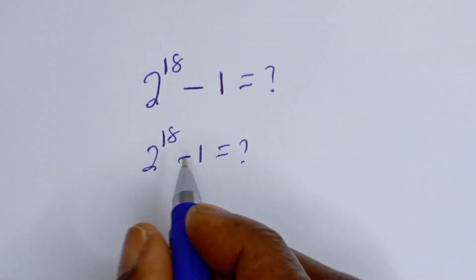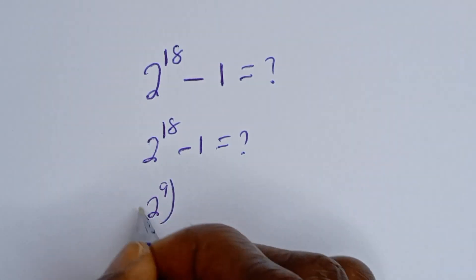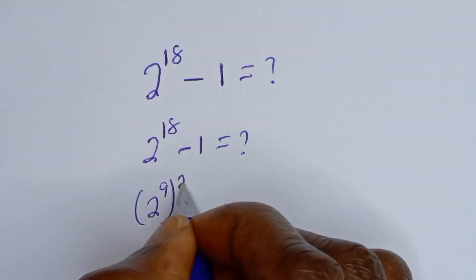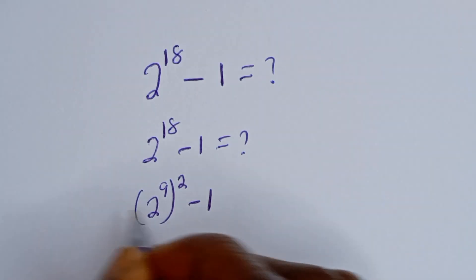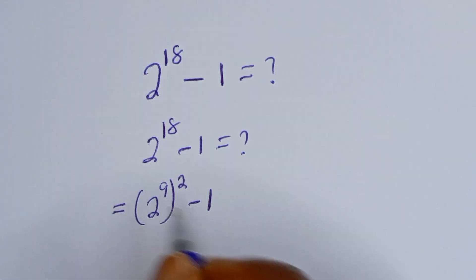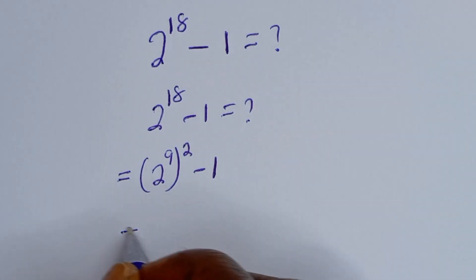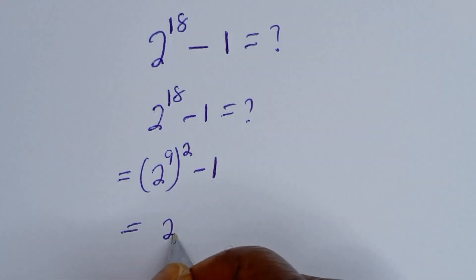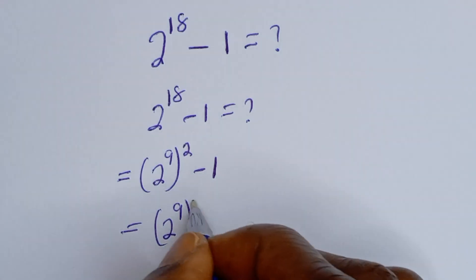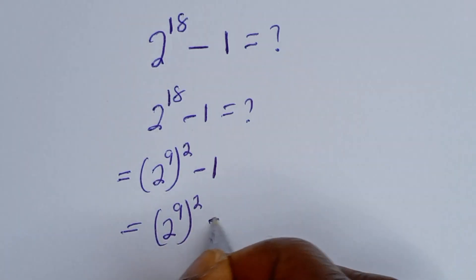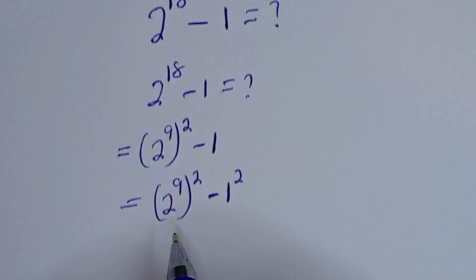2 to the power of 18 can be calculated as 2 to the power of 9 squared, minus 1. This is seen as 2 to the power of 9, all squared, minus 1 squared.